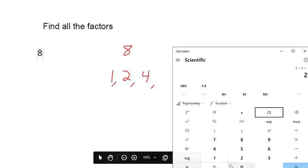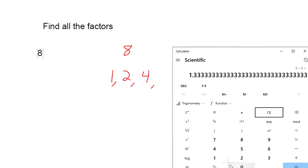And you can try out all the other numbers as you get closer. You can try 8 divided by 5, 8 divided by 6. Those are just giving us a bunch of decimals, right? So that's all the factors.